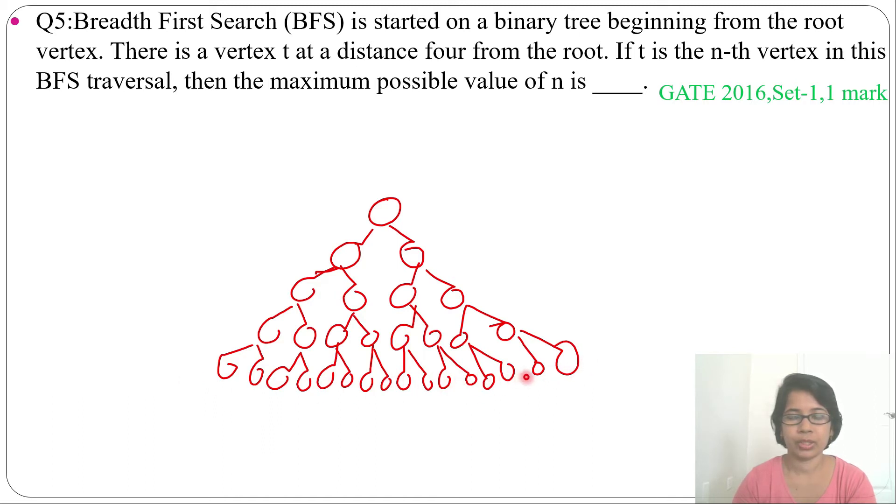What will be the maximum value of n? Maximum value of n means this will be the max. Here also distance 4, here all the leaf nodes having distance 4. Maximum value of n means it is present this way.